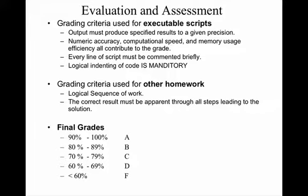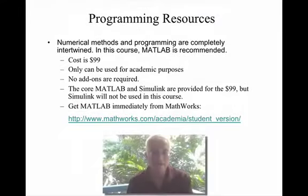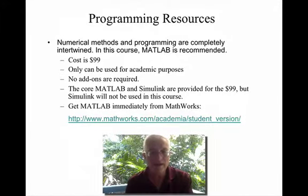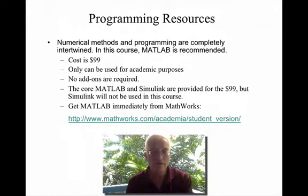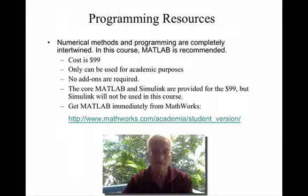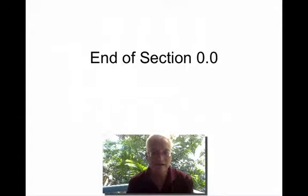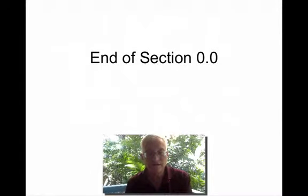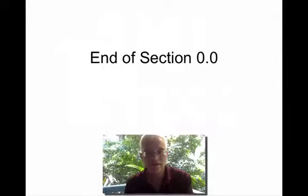Your final grades follow the standard OIT percentages listed there. As a reminder, MATLAB costs $99 with Simulink, but you don't need Simulink — I'm told you can get MATLAB by itself for $49. If you already have it, that's fine. That's as far as we'll go today. This ends your first of 52 videos — good luck, and send me an email if you have any other questions.